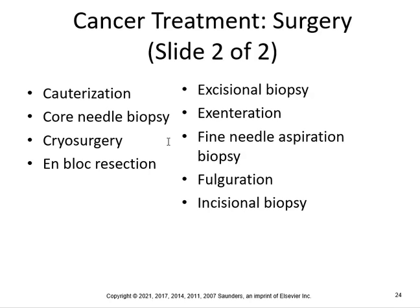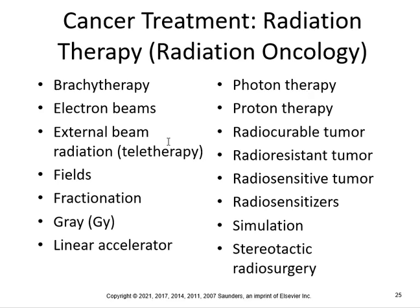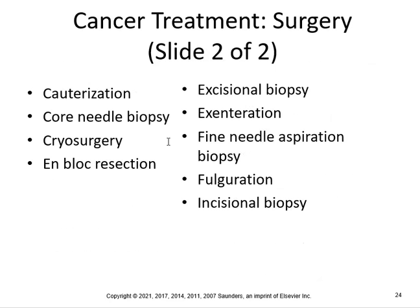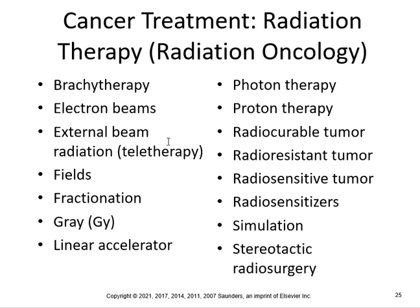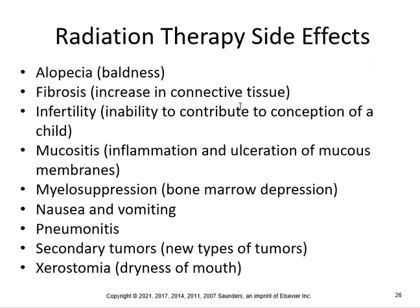Different surgical types include core needle biopsy, cryosurgery, en bloc resection, excisional biopsy, fine needle aspiration, fulguration, and incisional biopsy. For radiation, there are categories including brachytherapy, electron beams, external beam radiation, fractionation, gray, linear accelerator, photon, proton, radiosensitizers, and simulation. You just need to know the categories — you don't need to know every technical detail, but know that these are all part of radiation therapy.